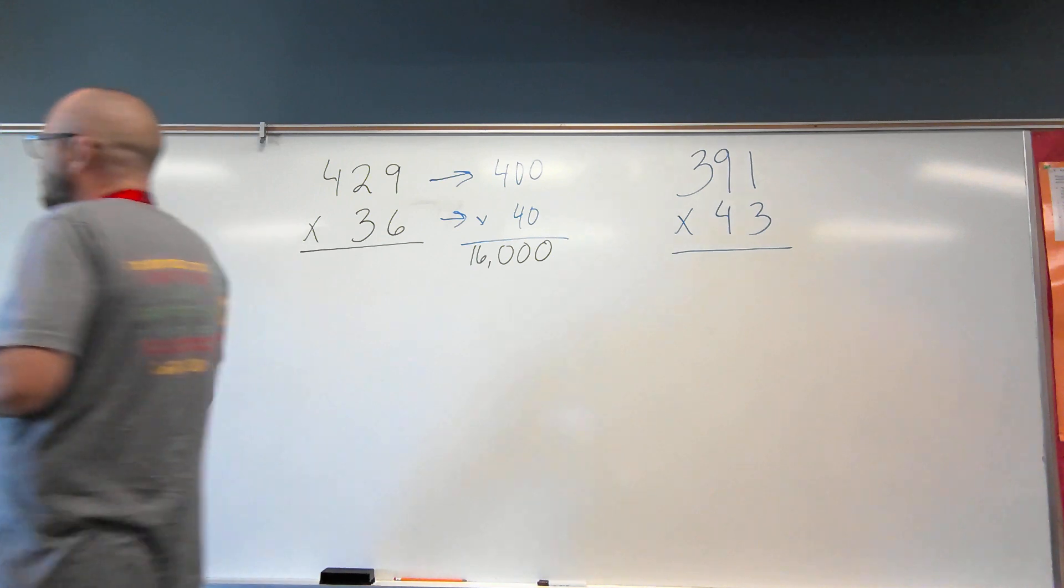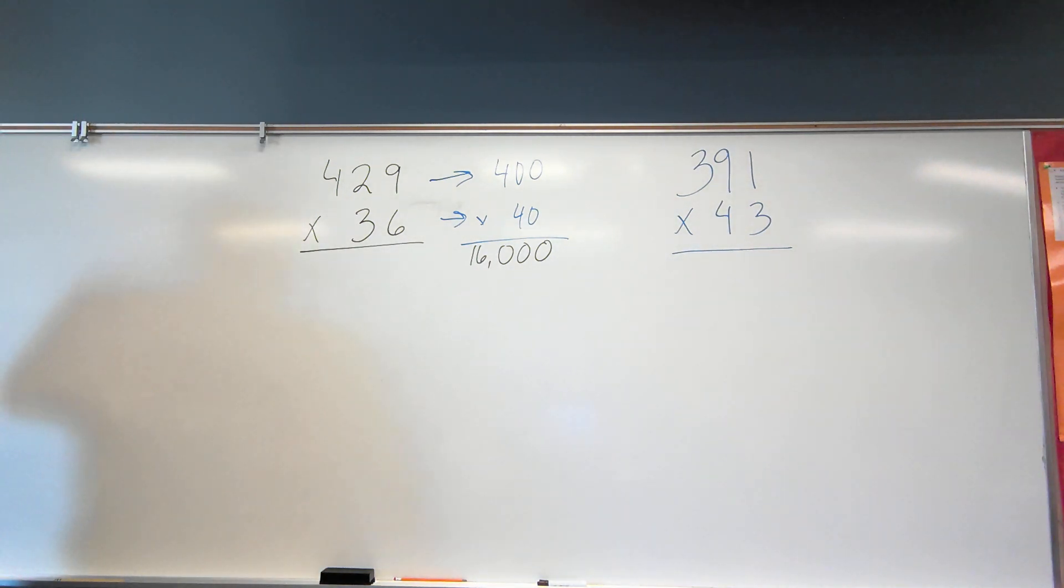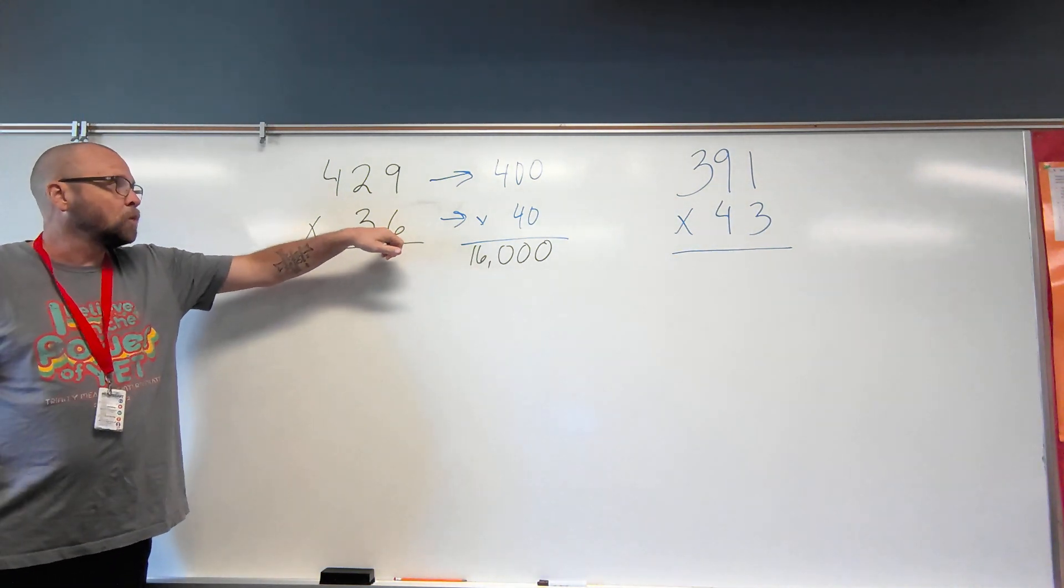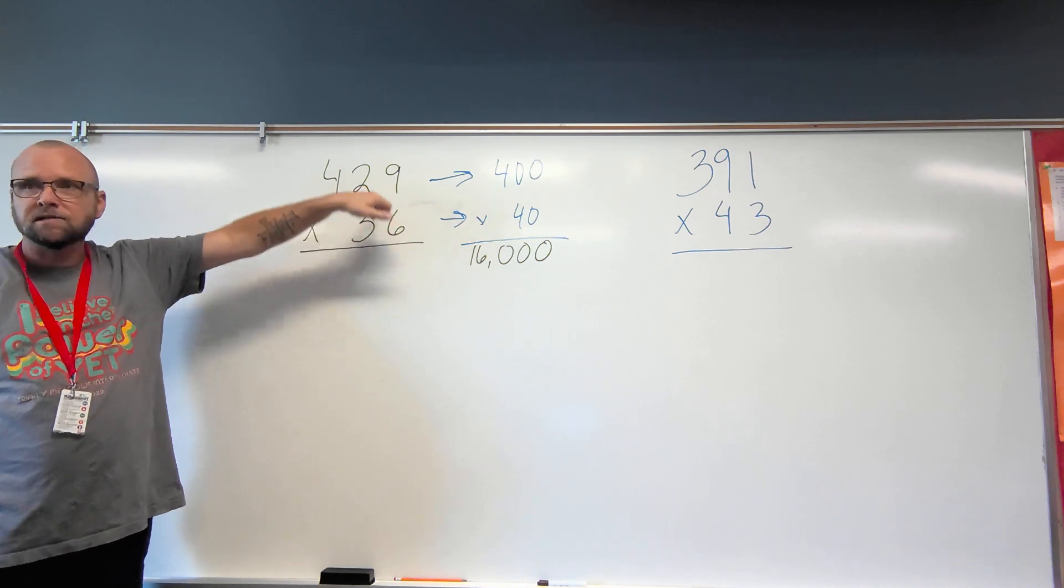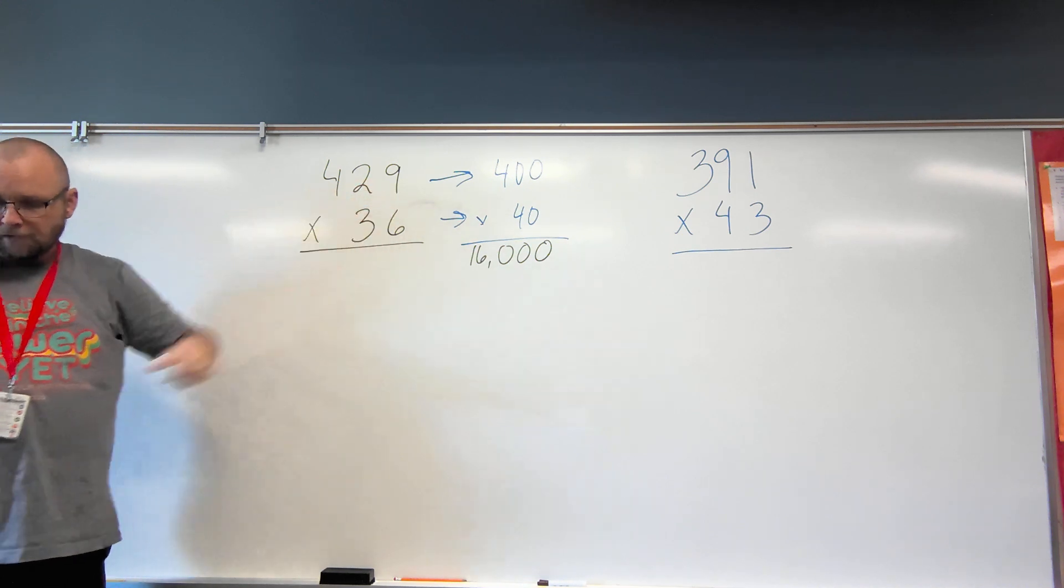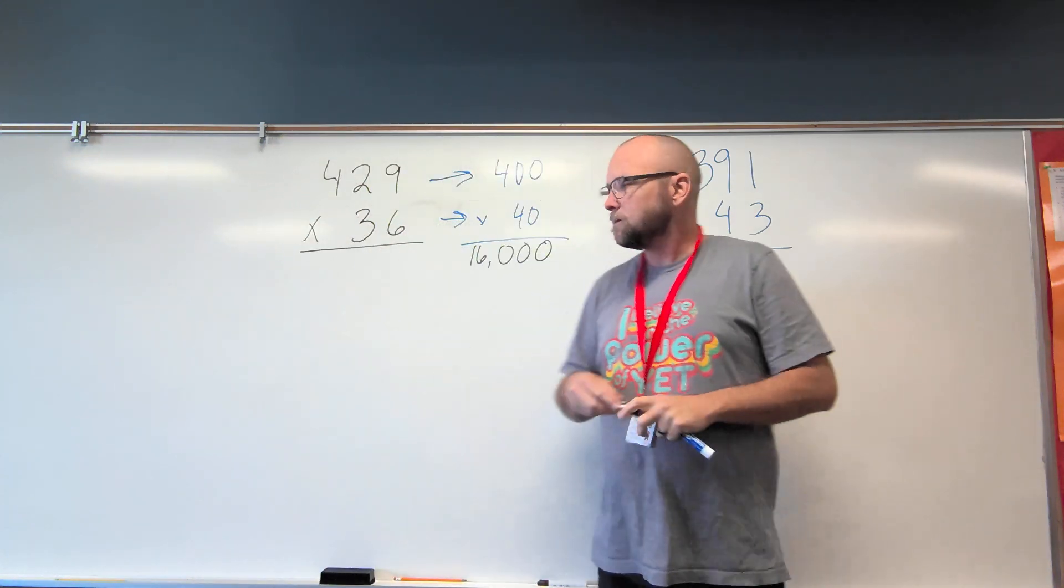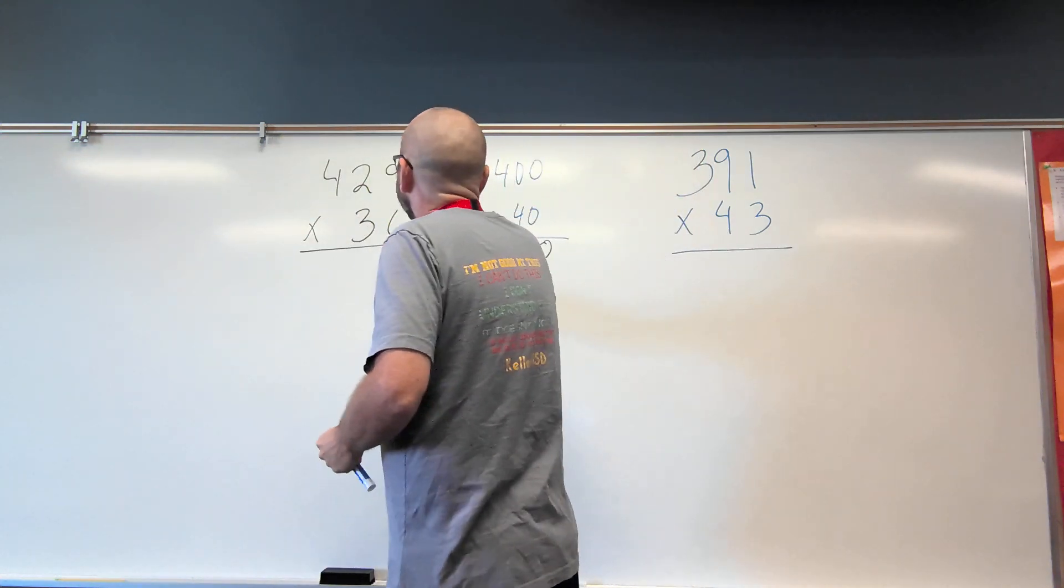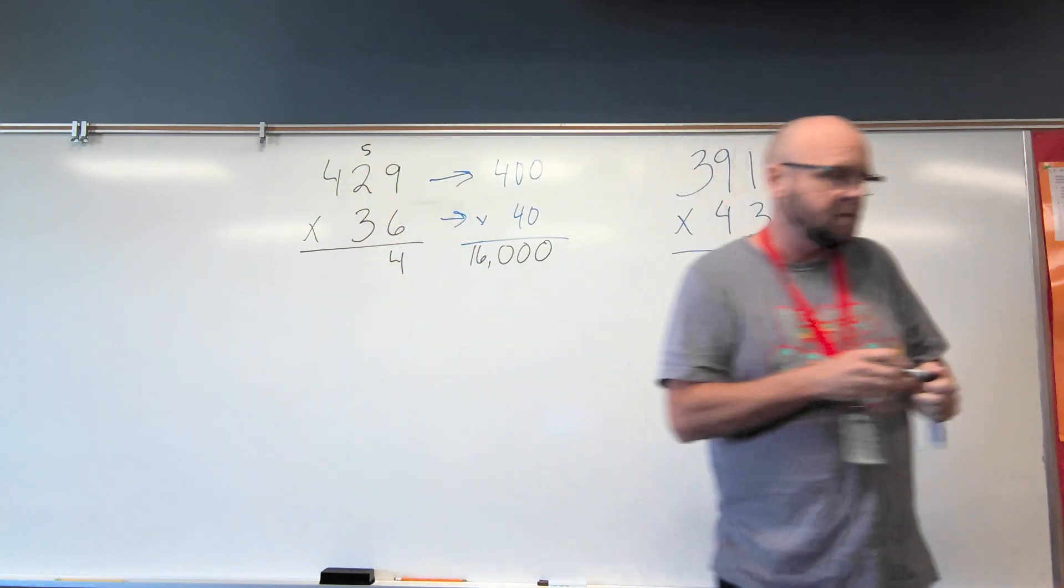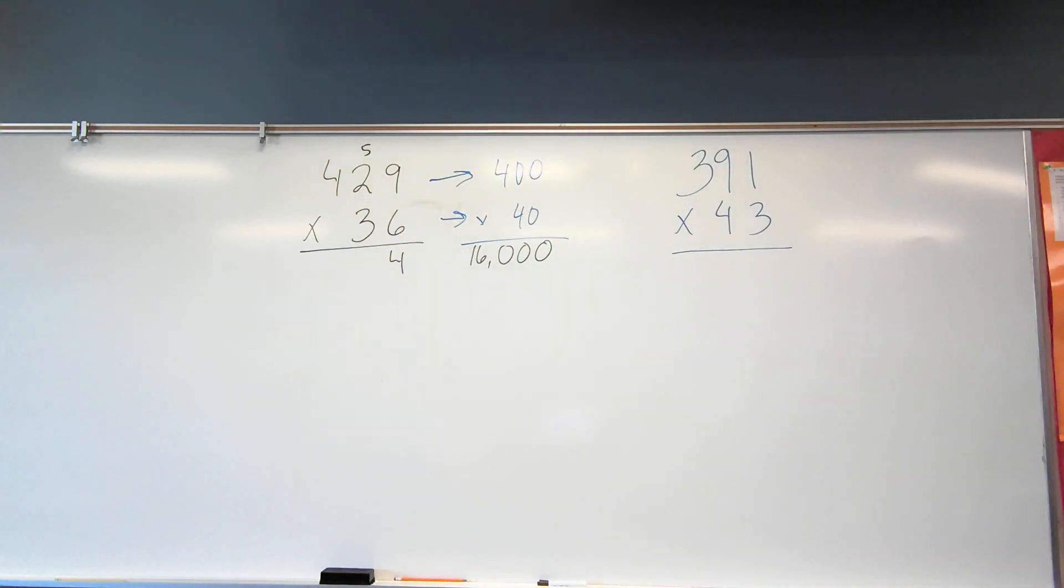All right, so let's look at first my ones place. I have six ones times nine ones. So what's six times nine? 54. That means I have 54 ones, which means four ones and five tens.